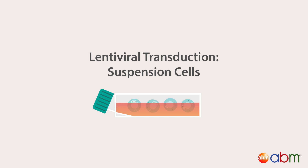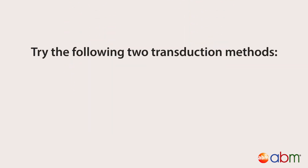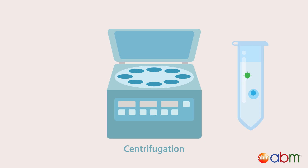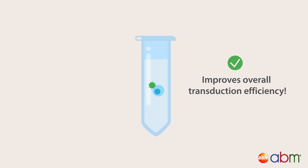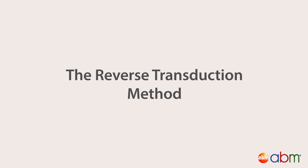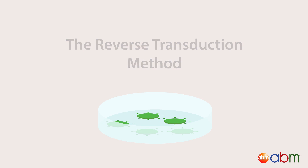If you are infecting suspension cells such as T or B cells, or if you are working with hard-to-transduce cells, you can also try the following two transduction methods. The spinoculation method — also called centrifugal inoculation — involves an additional centrifugation step. The centrifugal force assists the binding of viruses to cells and improves overall transduction efficiency. You can access the detailed spinoculation protocol in the video description.